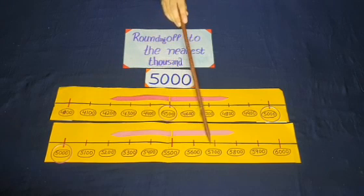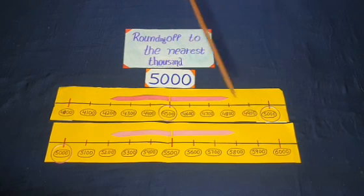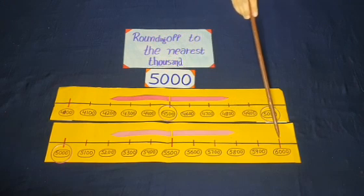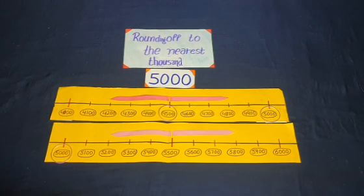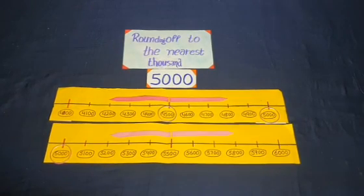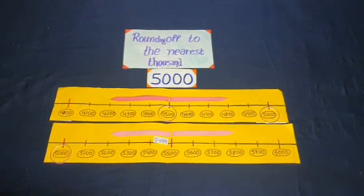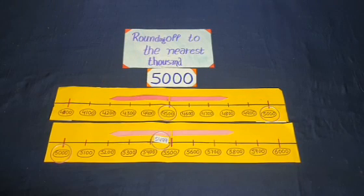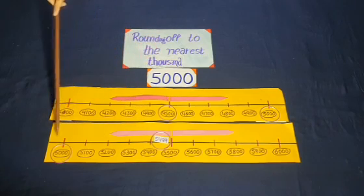If digits 5, 6, 7, 8, and 9 are at the place of 100, all these numbers go forward. We find the greatest number to round off to the nearest thousand to get 5000. The greatest number is 5499. Rounding off to the nearest thousand, we get 5000.